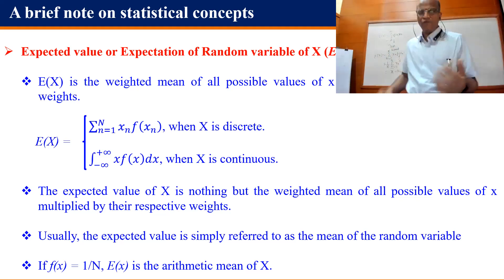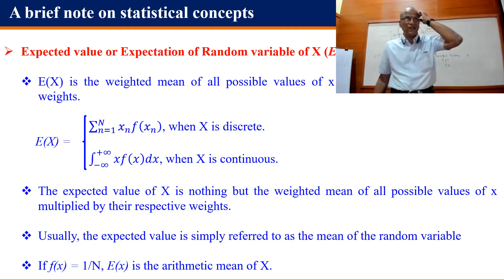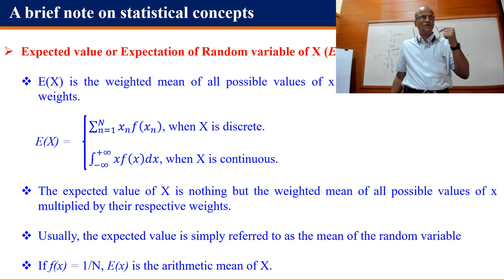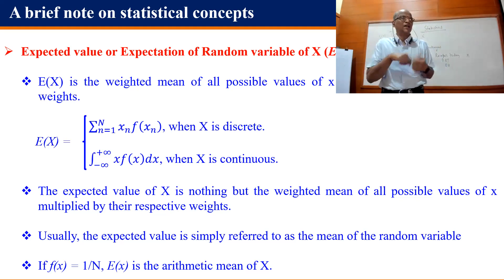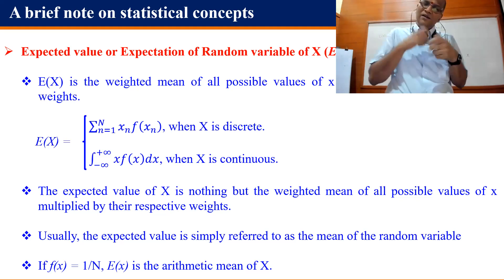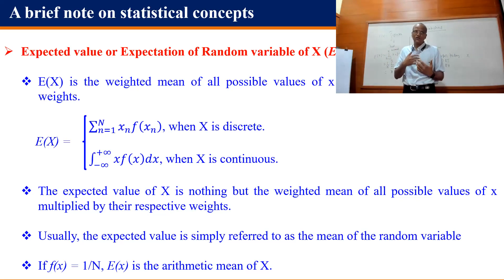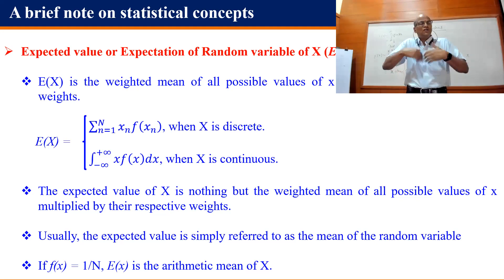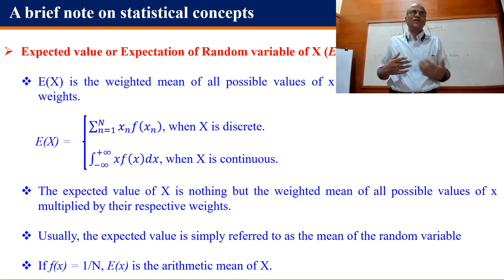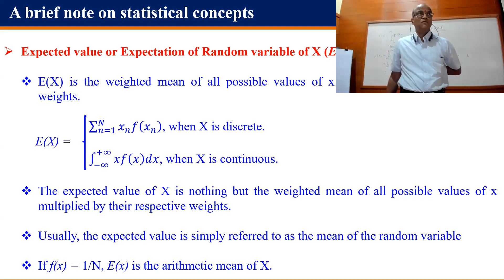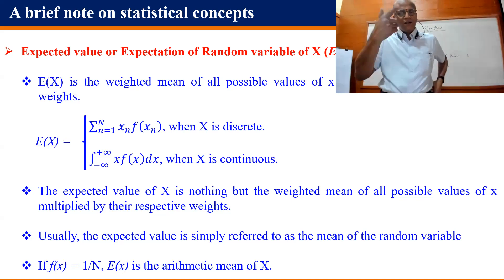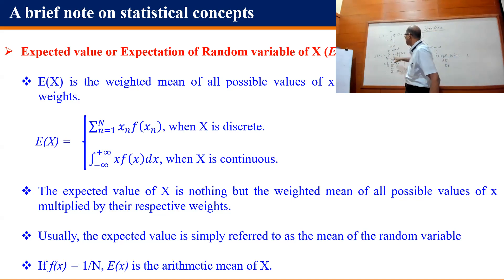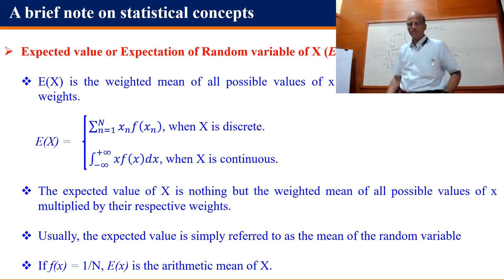What is subtle is that in daily life when you calculate the mean, the probability function f(x) you are using is actually 1/n without your knowledge. But if f(x) is a function of x — which is often the case in probability distributions — you must use the integral formula for continuous variables and the summation formula for discrete variables.